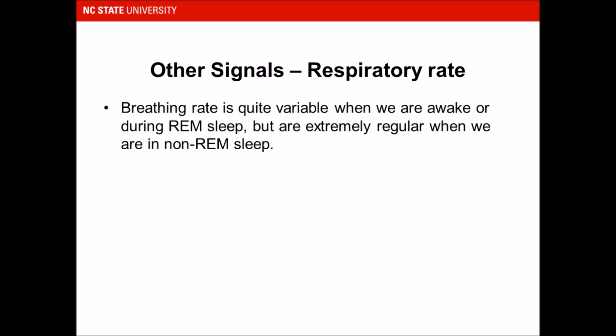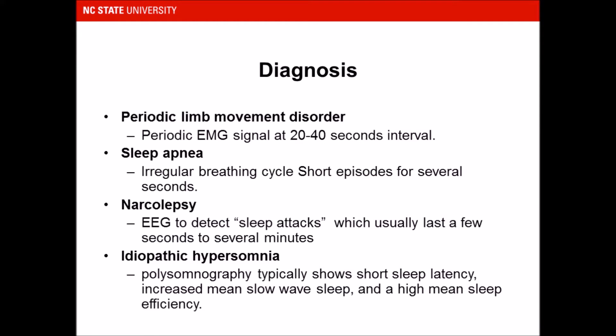We have now seen how all the recorded signals work in polysomnography. Now let's look at how we can use this data to diagnose different disorders and analyze sleep conditions. For periodic limb movement disorder, we measure the EMG signal, which typically shows a 20 to 40 second interval between each excitation of leg or head muscles — making it a very easily detectable condition.